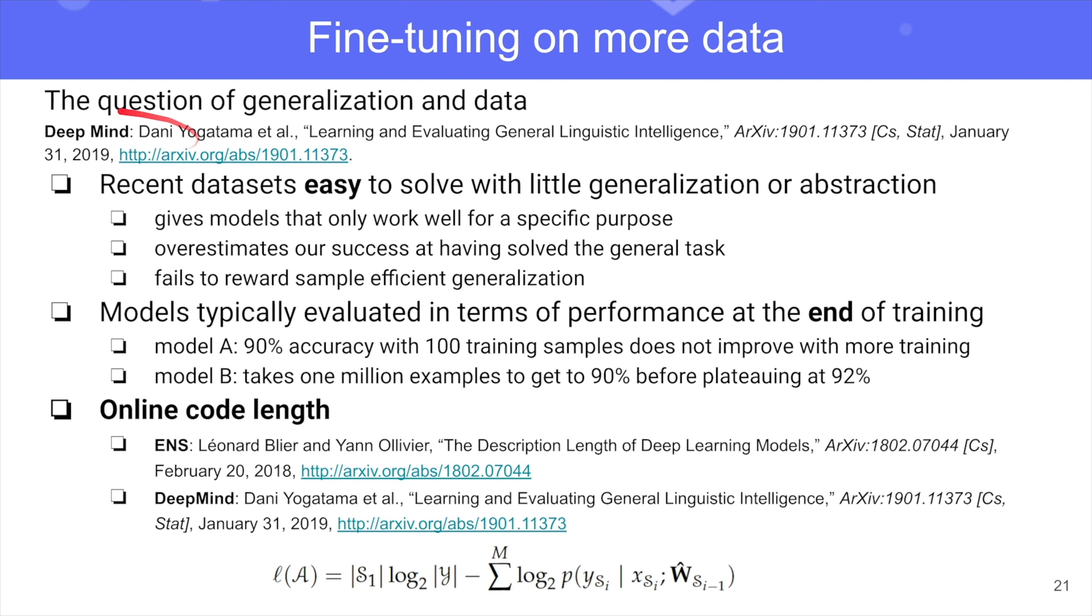This paper is a very important one from DeepMind, Learning and Evaluating General Linguistic Intelligence. It's a paper that kind of poses a lot of questions. It's an opinion paper. And you should definitely read it, I think. It's one of the most important of last year's papers. It's like now one year old. And what they say is that the recent datasets are actually too easy to solve with little generalization. Why? Because we have this training data set for the model that are usually often quite big, like MNLI or SNLI or SQuAD. They're really kind of big data sets to fine-tune on. And they give models that actually don't really have a good sample efficiency.